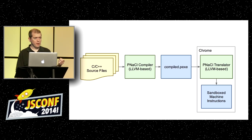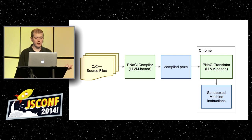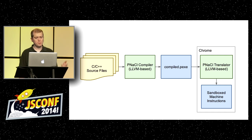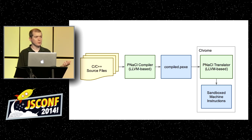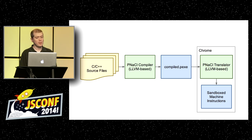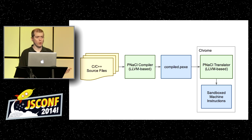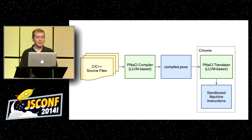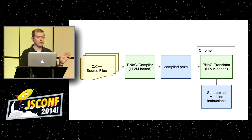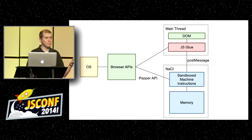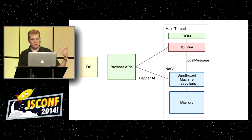Portable Native Client works like a traditional compiler: you take C++ source files, pass them to a slightly modified version of LLVM, and it produces a portable executable — a serialization of LLVM's internal format. Then inside the browser, your web page says it wants to embed this portable executable. Chrome grabs it, downloads it, and says: I can't run portable code, my processor is a real processor. So it translates it into local machine code and does a few tricks to verify the code is safe. At runtime, there's a NaCl process running these specially generated machine instructions — your native code executing.